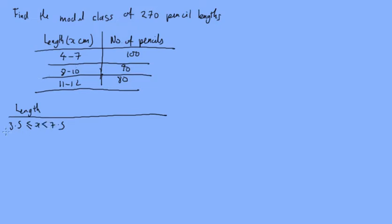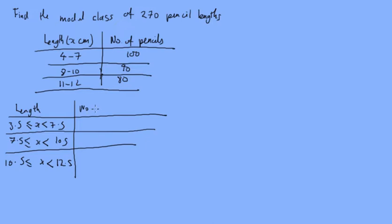And then we've got 7.5 ≤ x < 10.5, and the final one is 10.5 ≤ x < 12.5. And then our number of pencils again, this is the same, it's meant to be 90 and 80.